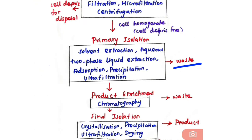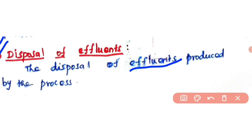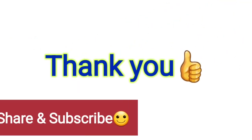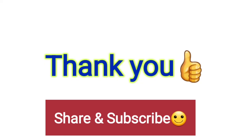One more important point to consider is disposal of effluent. In each step you generate some waste to dispose of. Effluent is the waste produced during the fermentation process, and you should dispose of it safely without harming the environment. Thank you for watching. If you like the video, please like, share, and subscribe.